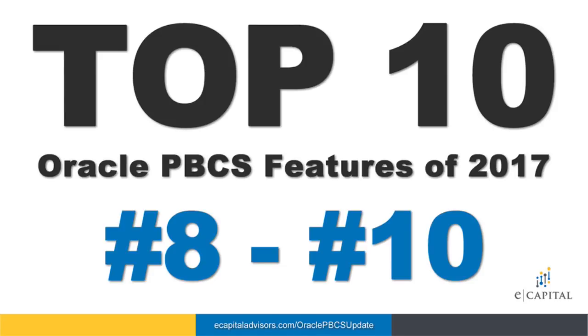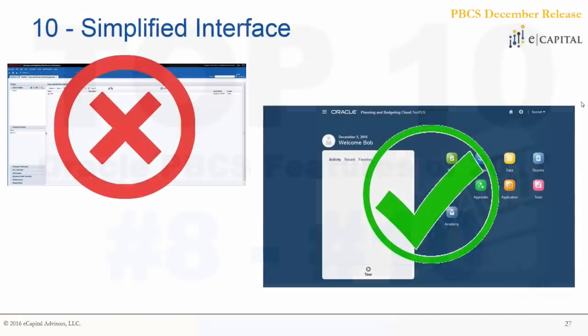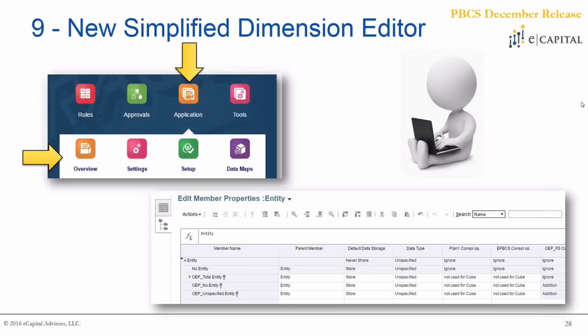Number 10, working our way backwards, is our move to the simplified interface. This is something we strongly encourage all of our clients to adopt right off the bat, but now that we are officially coming to the close of 2017, you're going to have to make that transition regardless. The simplified interface is definitely the way to go — it really provides a more engaging forecasting and budgeting process and makes a lot of sense from a streamlined capabilities standpoint.